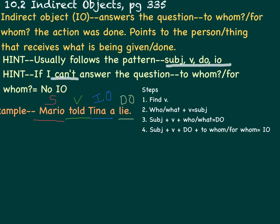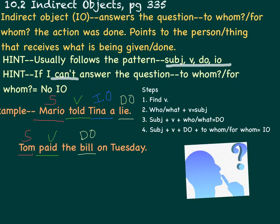Let's try another. Tom paid the bill on Tuesday. The verb? Paid. Who or what paid? Tom. Tom paid who or what? The bill. That's the direct object. Paid the bill to whom or for whom? I can't answer that question. So there's no indirect object in this sentence.